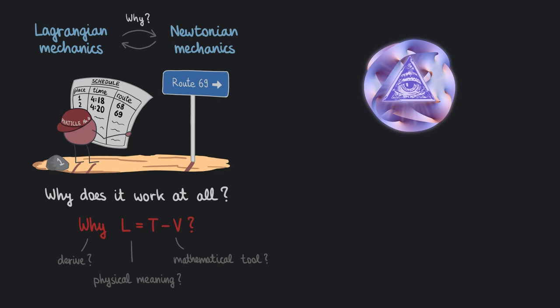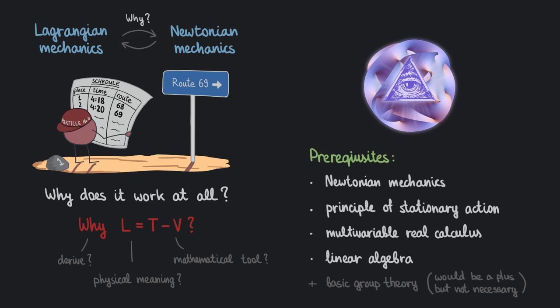To answer these questions, we would need to make some assumptions. The starting point for us is going to be the notion of space and time symmetries. Here are the prerequisites: I assume that you know Newtonian mechanics and are somewhat familiar with the principle of stationary action itself, so we are not going to discuss it in detail, only briefly. I also assume you know multivariable real calculus and linear algebra pretty well.